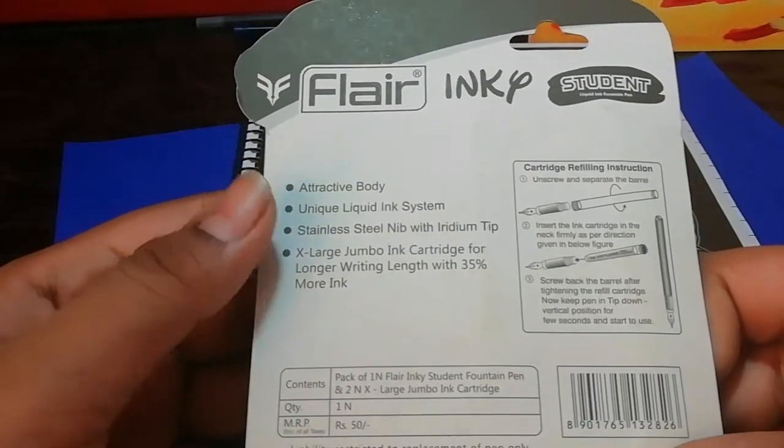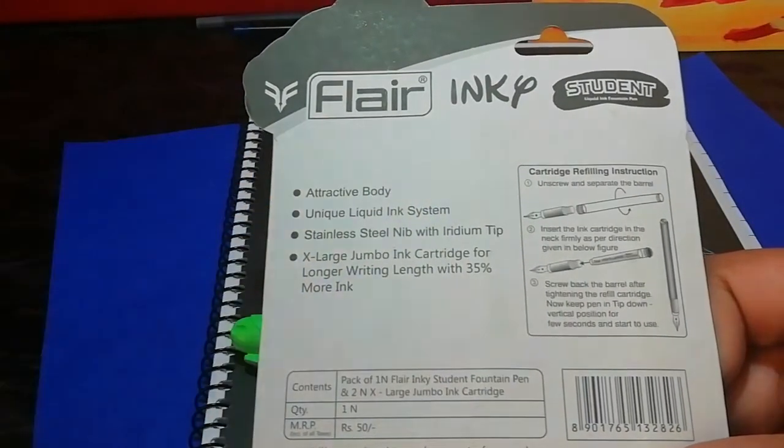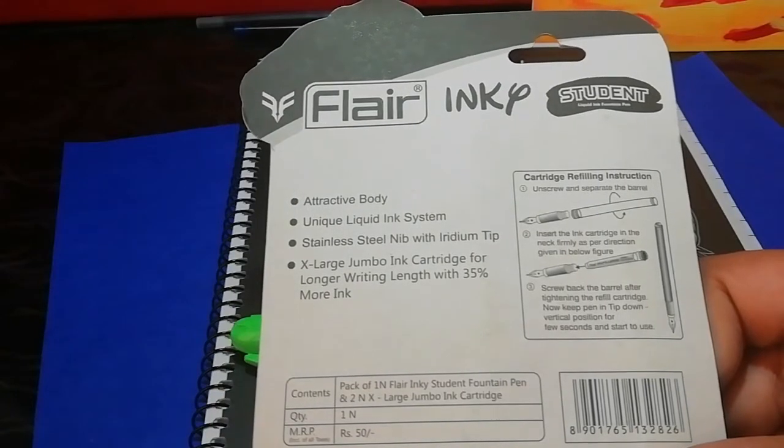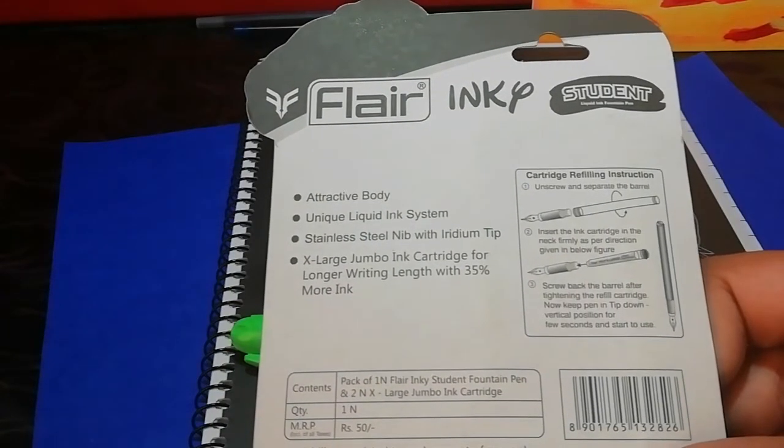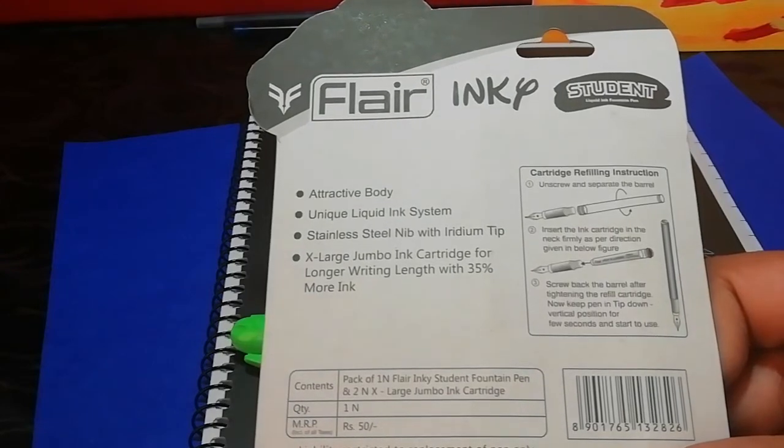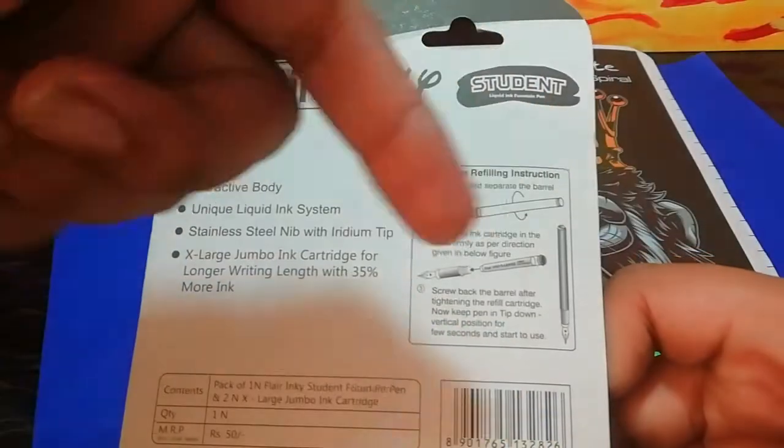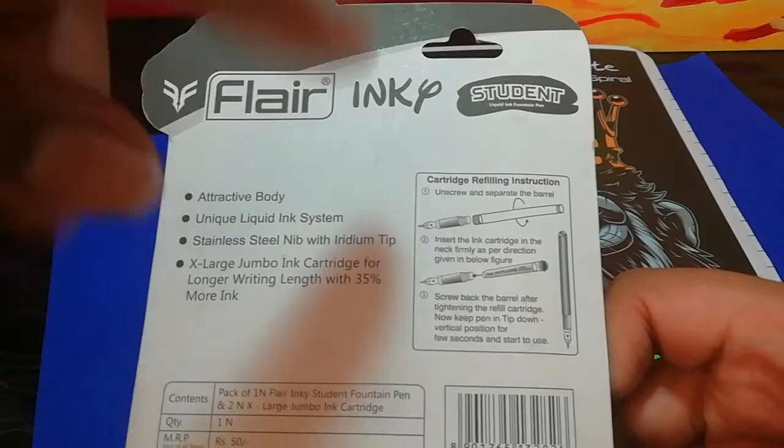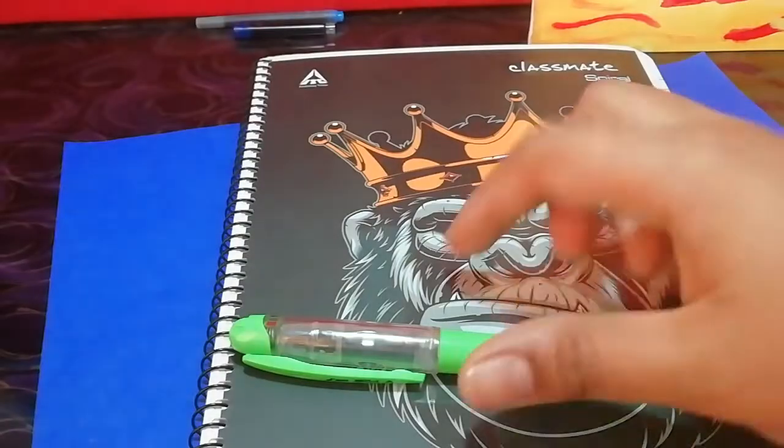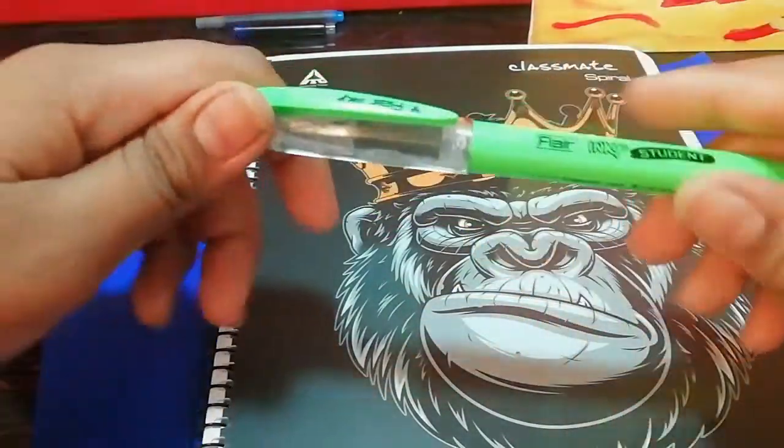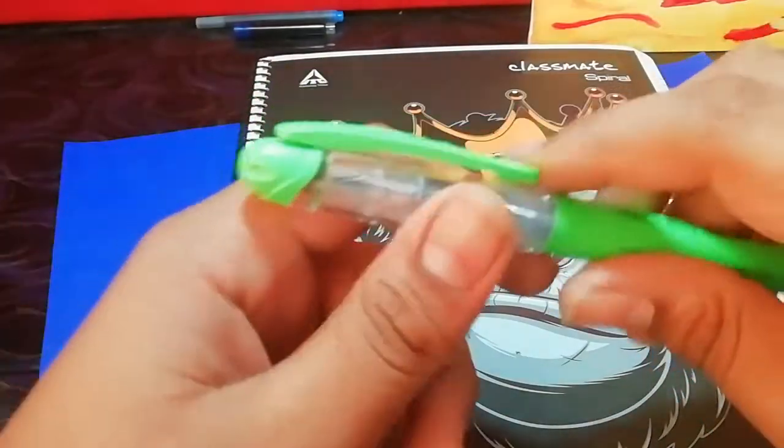It is manufactured by Flare writing instruments. It says attractive body, unique liquid ink system, stainless steel nib with iridium tip, extra large jumbo ink cartridge for longer writing length with 35 percent more ink. Also, you get some refilling instructions over here. You don't get a converter with it, but considering the price it's fine.